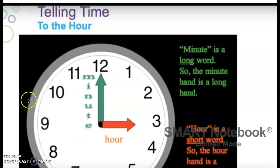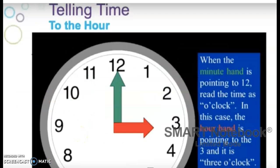This I actually already told you so I'm going to skip over this slide. Moving on. Whenever the minute hand is pointing to the 12, it's always going to be three o'clock. The hour hand in this case is pointing to the three. So the way that you read this is three o'clock.